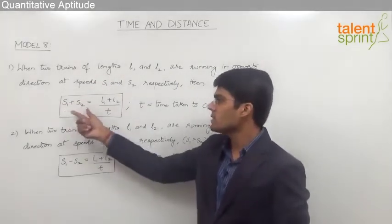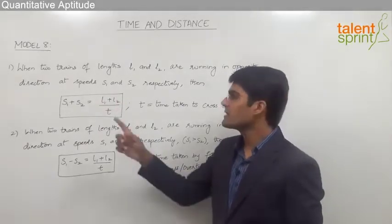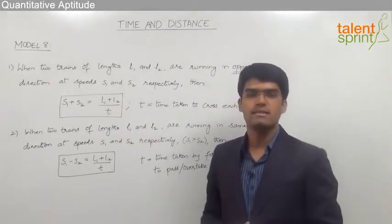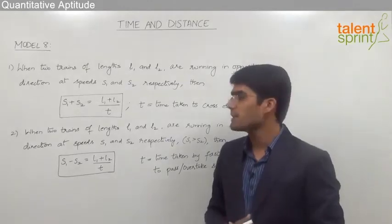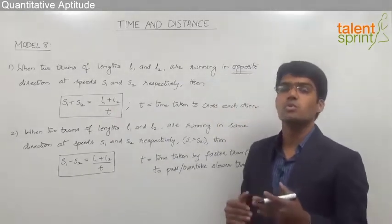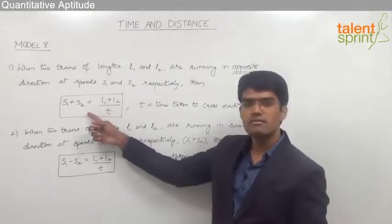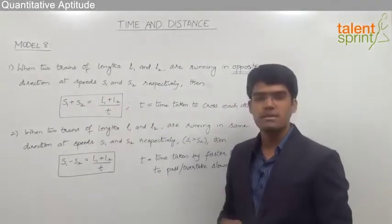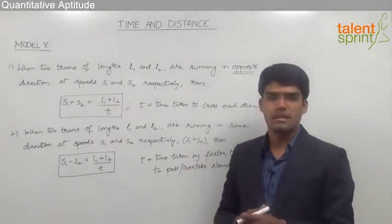So the basic equation when two trains run in opposite direction is S1 plus S2 equals to L1 plus L2 by T, where S1, S2, L1 and L2 are the speeds and lengths of the first and second trains respectively, and T is the time taken by the two trains to cross each other. With this equation we can find any one of these five variables when the remaining four are given.